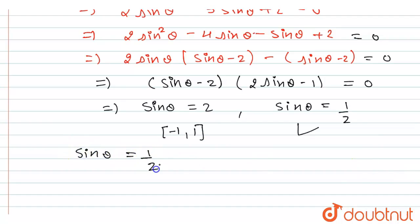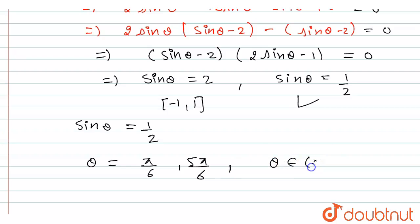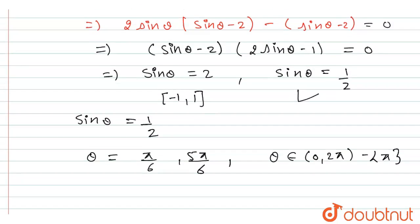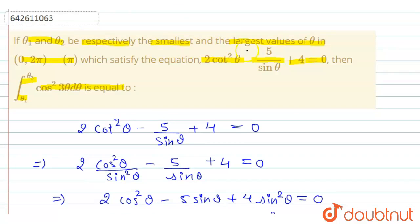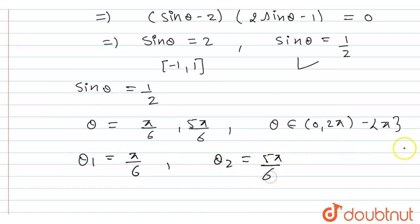Since sinθ = 1/2, θ = π/6 or θ = 5π/6. The interval given is (0, 2π) minus the singleton {π}, so both values are valid. Therefore, θ₁ = π/6 (smallest) and θ₂ = 5π/6 (largest).